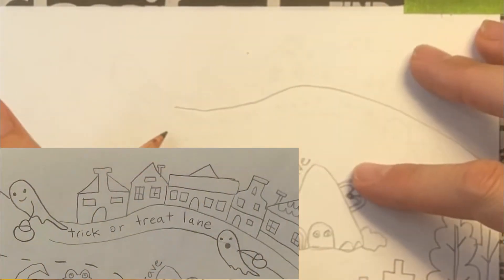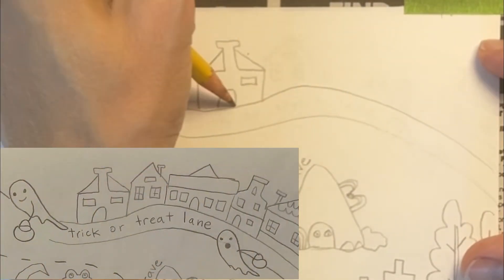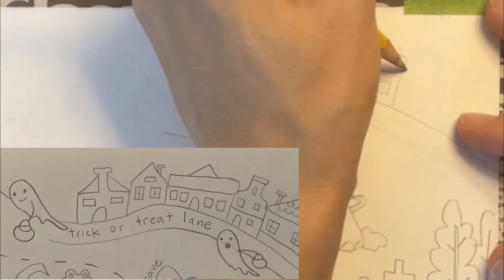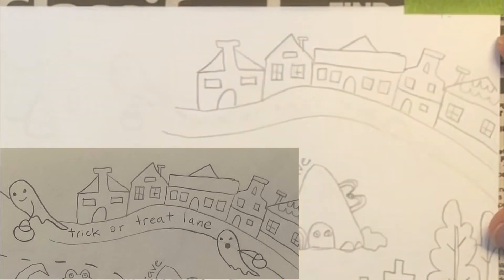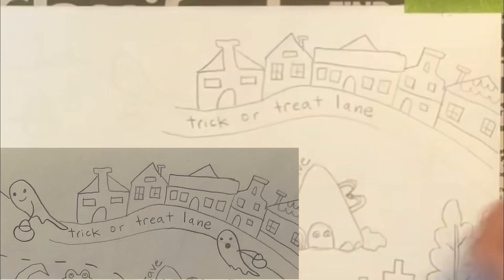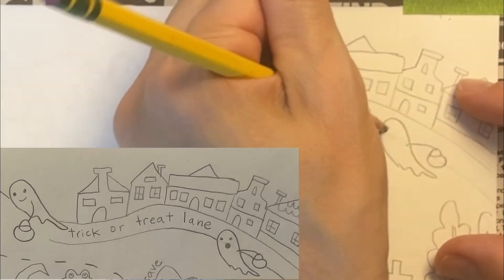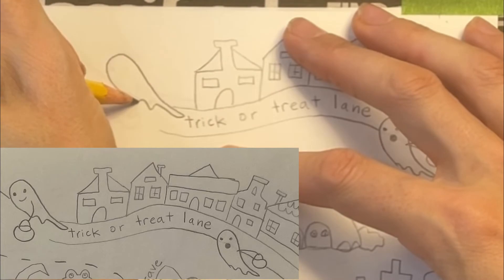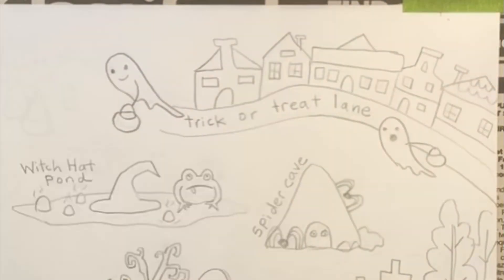Here in the far background, I'm drawing a road and then adding some houses along it so that there will be a place to go trick-or-treating. I'm going to call it Trick-or-Treat Lane. I'm adding a couple of ghosts that are trick-or-treating.